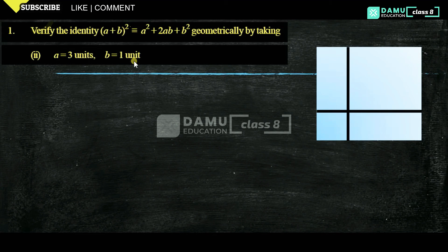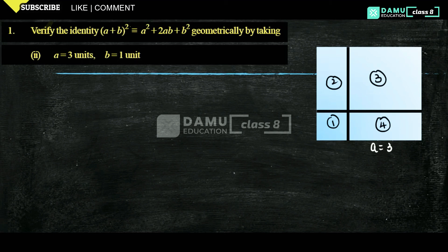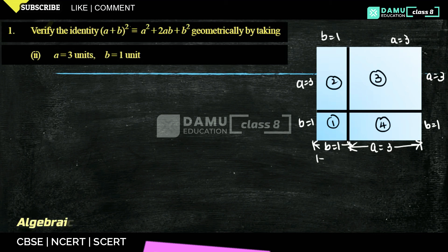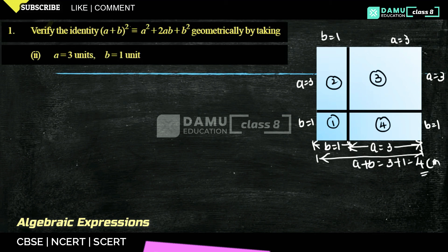Here, a equals 3 units, and b equals 1 unit. Let us label the figures 1, 2, 3, 4. A equals 3 along one side and b equals 1 along the other part. Here also b equals 1, here A equals 3. Total from here to there: a plus b equals 3 plus 1, which is 4 centimetres. Here also 4 centimetres.